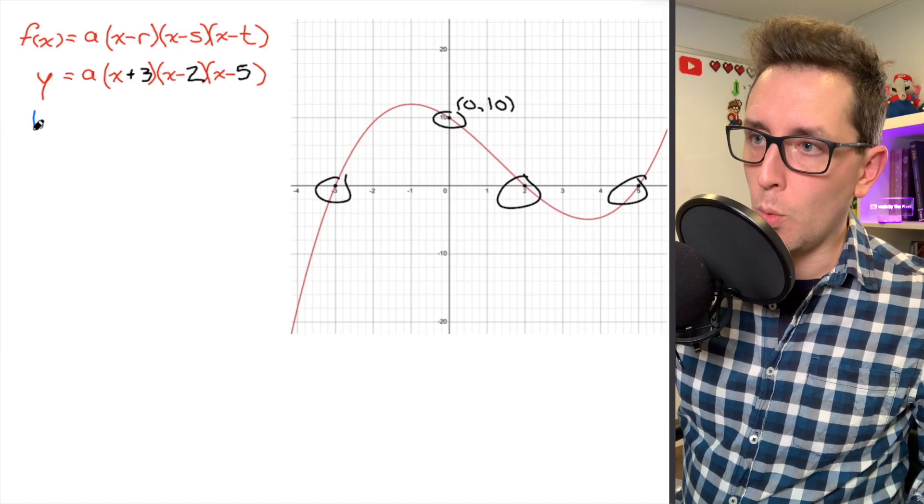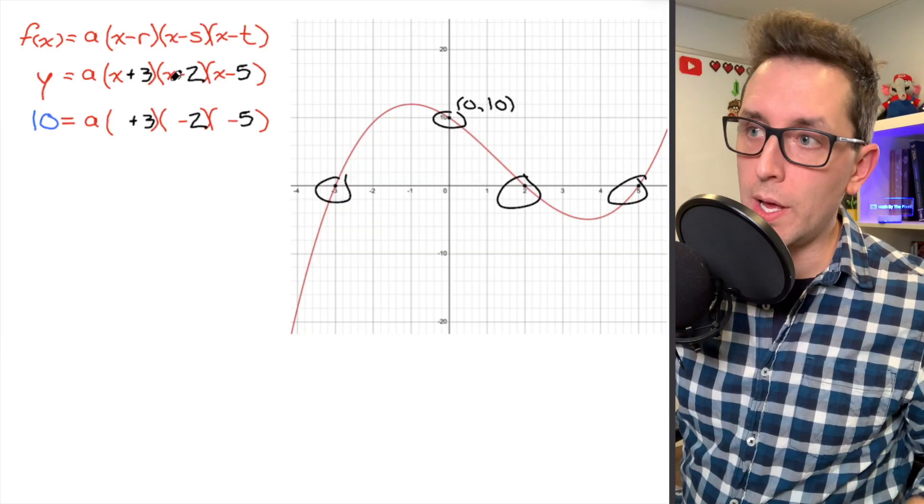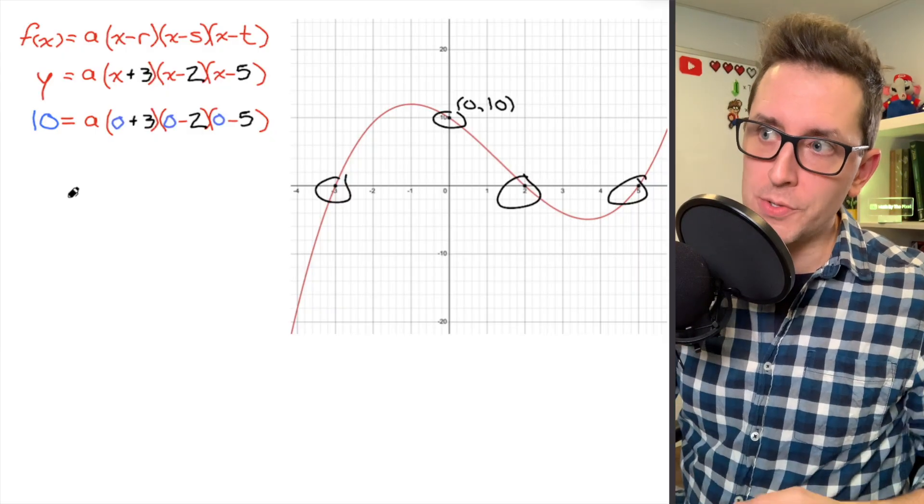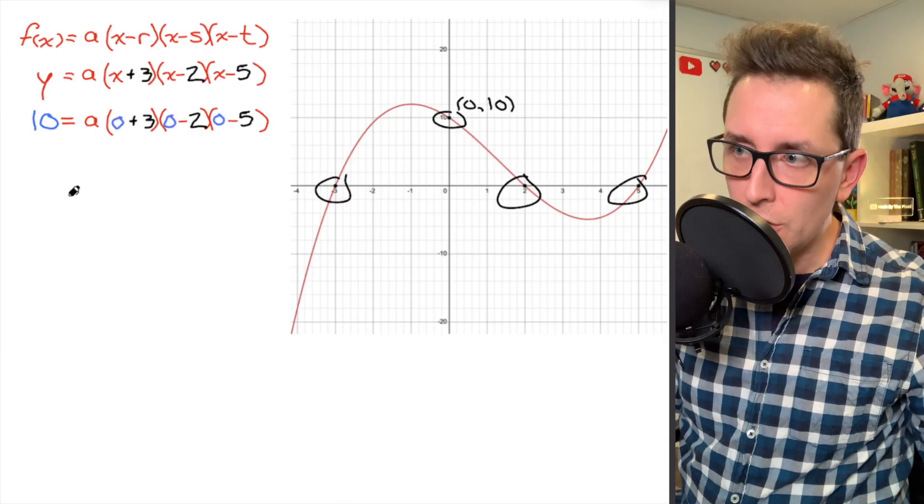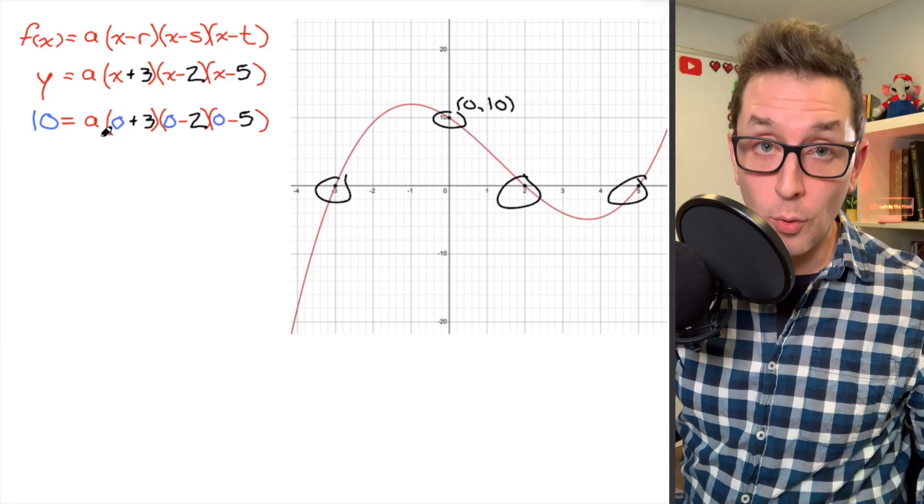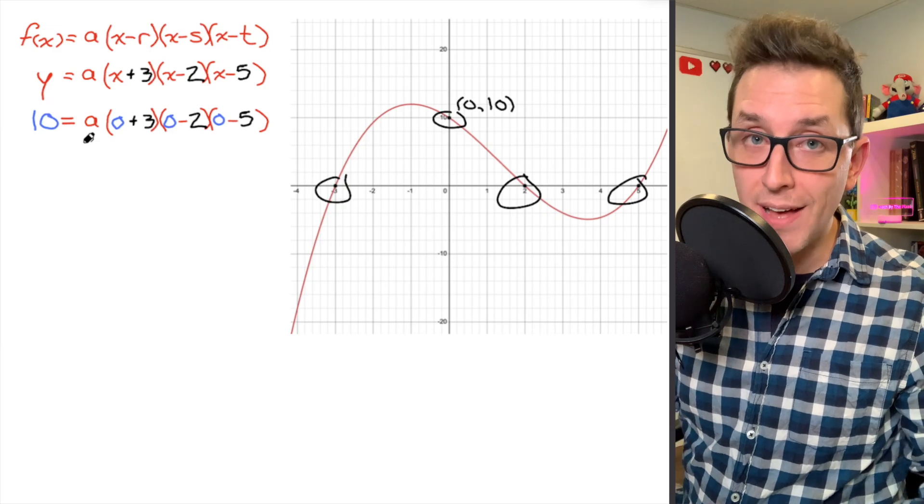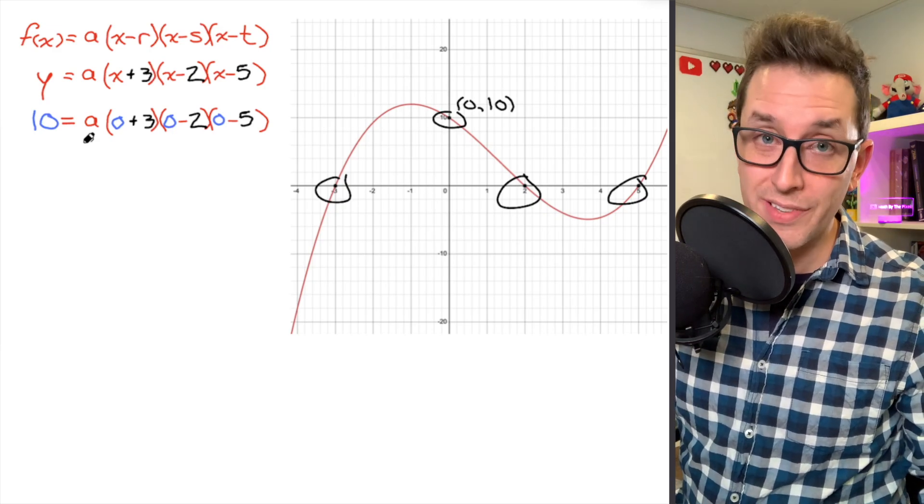All right, so let's take that step right now. I'm going to replace that y with a 10. And working from left to right, wherever you see an x in that equation, I'm going to replace it with a 0. At this point in this process, you can see that I've eliminated any unknown variables or parameters, except for that a parameter. So this is going to allow us to determine the value of a, and we're going to do that using a little bit of simple algebra.